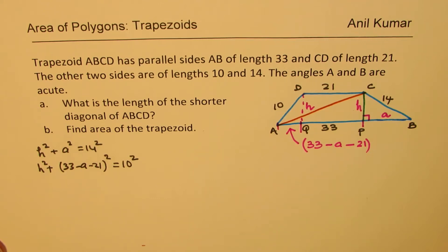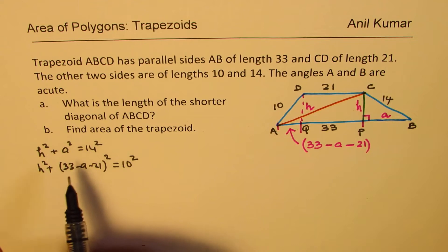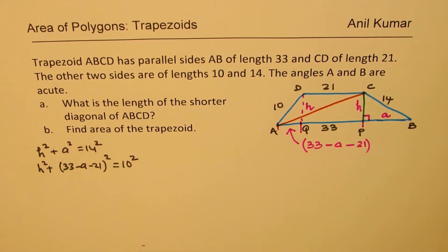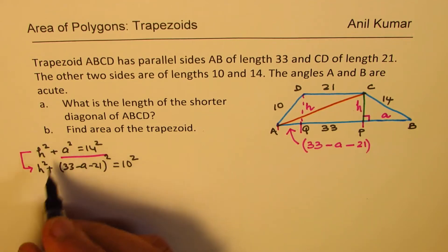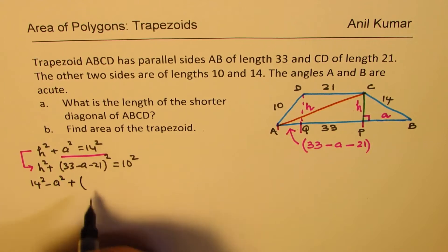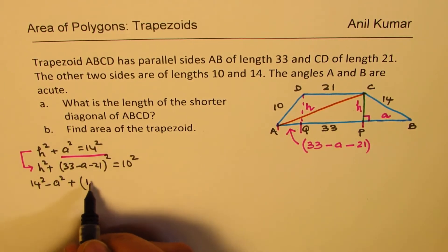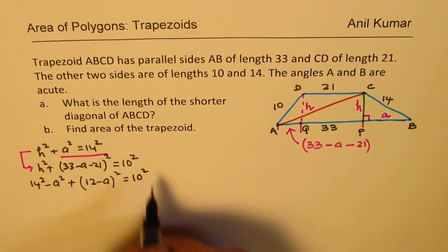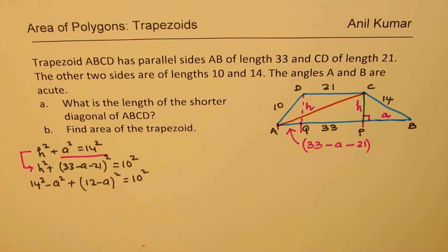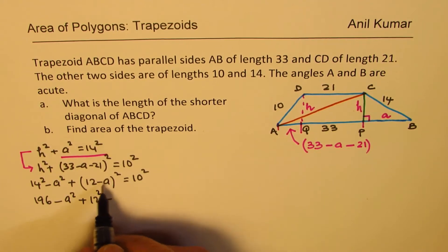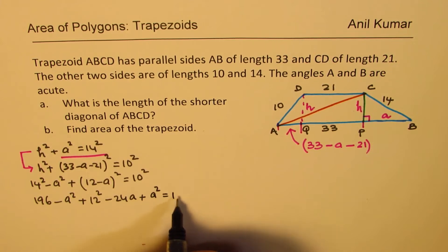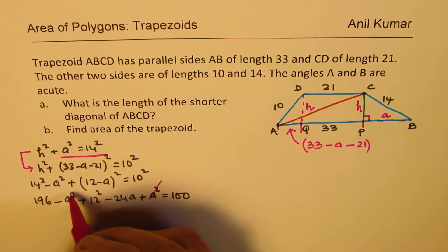We have two equations and two unknowns. Substituting H² = 14² − A² = 196 − A² into the second equation gives: 196 − A² + (12 − A)² = 100. Expanding (12 − A)² gives 144 − 24A + A². The A² terms cancel, leaving a linear equation: 196 + 144 − 24A = 100.